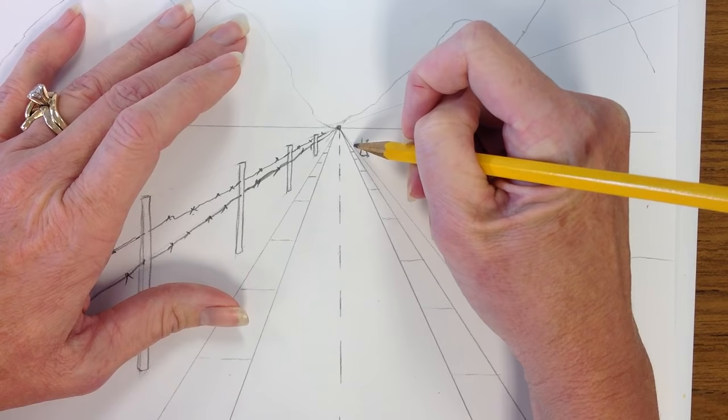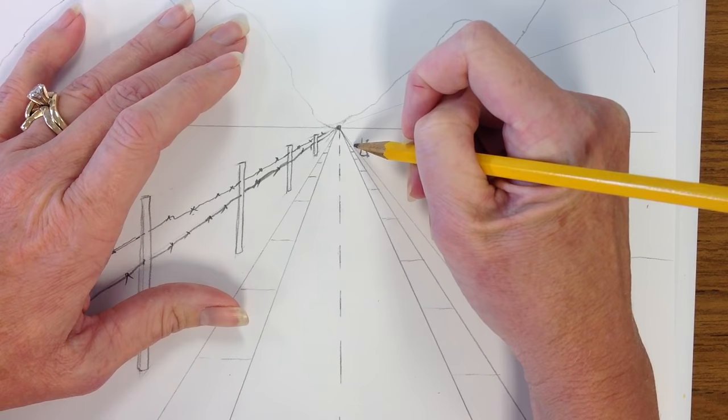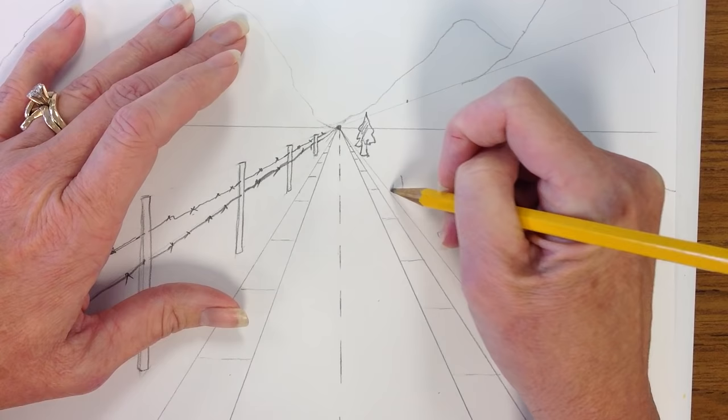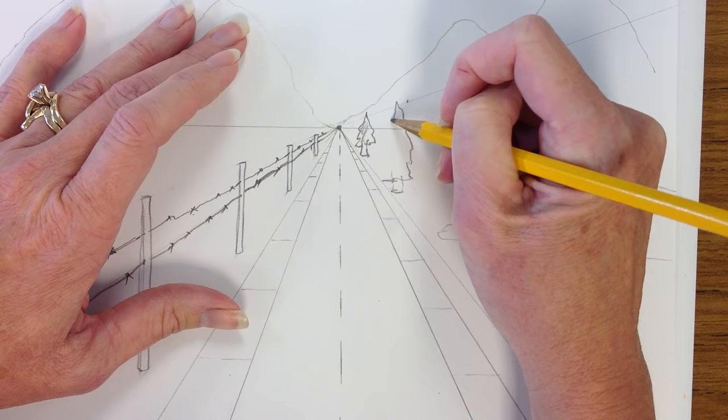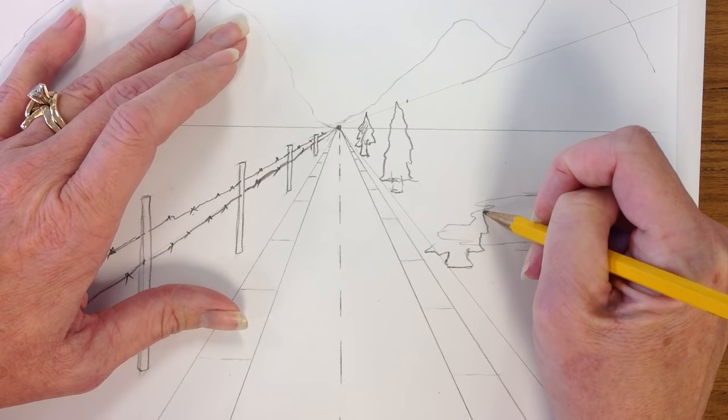As I draw, since these pine trees are going to be in a row, I want to try to keep them so that the top is going to go to this line and the bottom is going to go right to that line. I can go over a little bit. Trees aren't perfect.